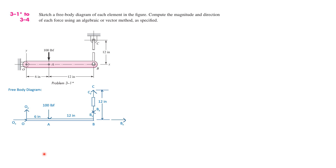Now, focus on point O. You can see that there are two reaction forces: one acting in the Y direction and another acting in the X direction. When we assign reaction forces, we need to consider whether the point of the body can move in the X or Y direction. For point O, you cannot move it in the X direction because it is pinned to the handle. So, in order to prevent external forces from allowing that movement, we need reaction force Ox. Same goes for the Y direction — we have reaction force Oy.